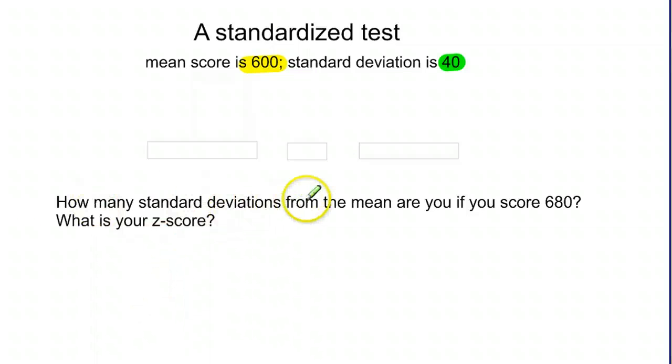When we go down here it says how many standard deviations from the mean are you if you score a 680? Well if the mean is 600 and you go above one standard deviation you get to 640. If you go above two standard deviations you get to 680.